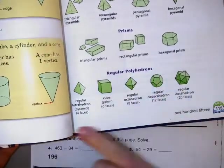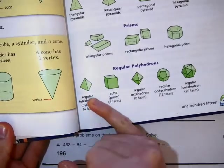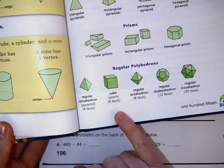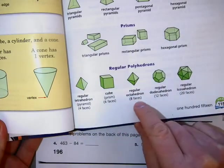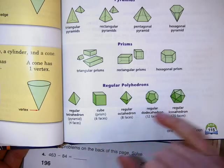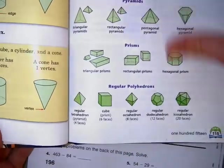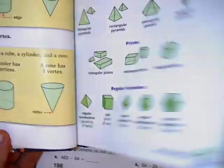We have regular polyhedrons. We've got a regular tetrahedron, which has 4 faces, a cube which has 6 faces, a regular octahedron which has 8 faces, a regular dodecahedron which has 12 faces, and a regular icosahedron which has 20 faces. Some of you may have seen dice with this number of faces on them.